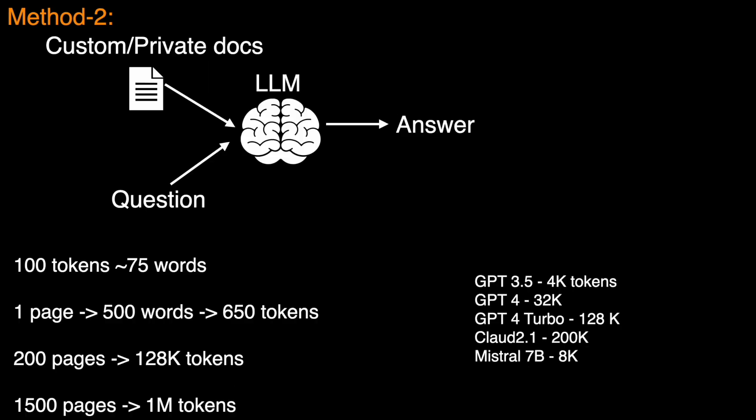And the second method is much simpler and straightforward. Where we simply provide our private documents at the time of inference. So here we have an LLM and we are asking a question. And along with the question, we also provide our private documents so that the model is able to answer.